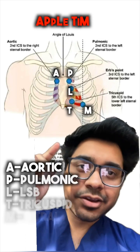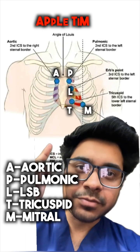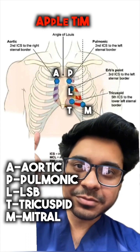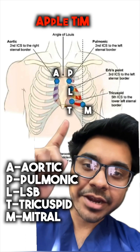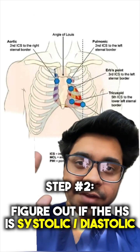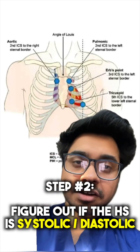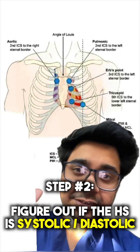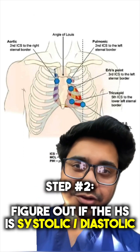That is the aortic, pulmonic, left sternal border, tricuspid, and mitral valve. Step number two: figure out if the heart sound is systolic or diastolic.